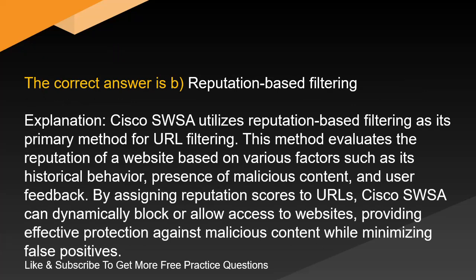Explanation. Cisco SWSA utilizes reputation-based filtering as its primary method for URL filtering. This method evaluates the reputation of a website based on various factors such as its historical behavior, presence of malicious content, and user feedback. By assigning reputation scores to URLs, Cisco SWSA can dynamically block or allow access to websites, providing effective protection against malicious content while minimizing false positives.